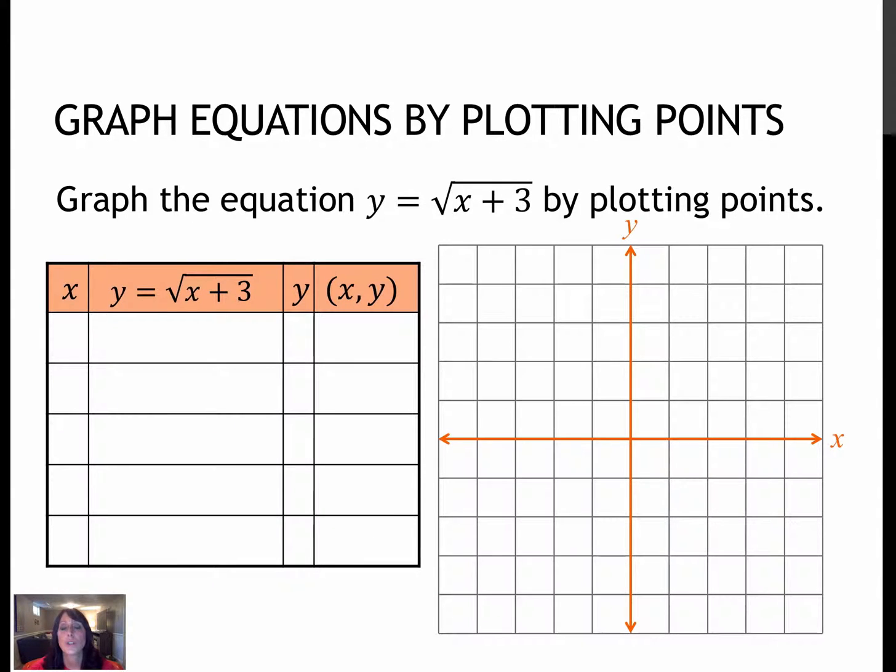Here's another for us to try by plotting points. Again, this is a square root, and so it's important that we try a lot of points here. So negative 3, negative 1, 0, 1, and 3. We'll try all of those. So again, notice I'm still plugging in values for x. Negative 3 plus 3 is 0, and then that would just be the square root of 0 is 0. So negative 3, 0 is a point.